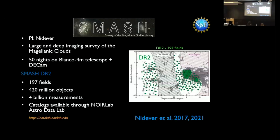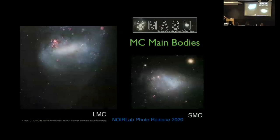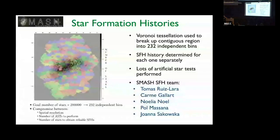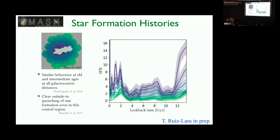SMASH is a survey I led with about 40 people. We got 50 nights on the Blanco 4-meter with the Dark Energy Camera, covering about 200 fields with 400 million objects; catalogs were released in 2019. One major goal was to do really deep star formation histories. Thomas Ruiz-Lara broke the LMC data into a Voronoi tessellation of 232 independent bins and ran star formation histories for each separately, which requires extensive artificial star tests — the hardest part of deriving SFHs.